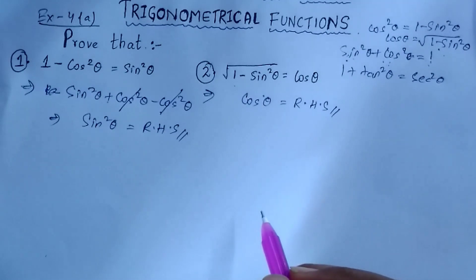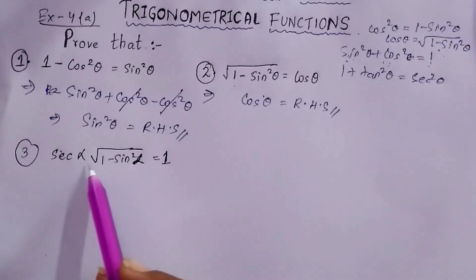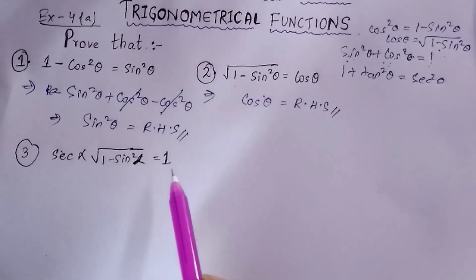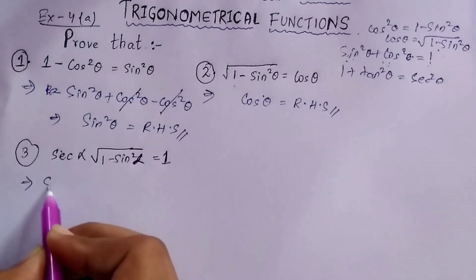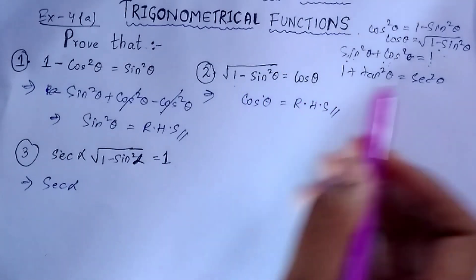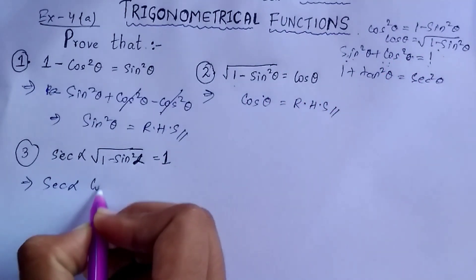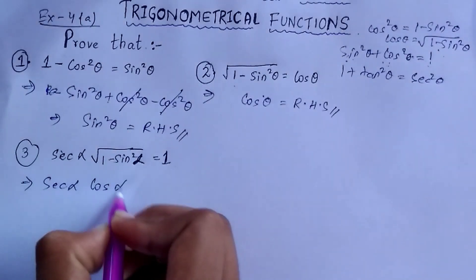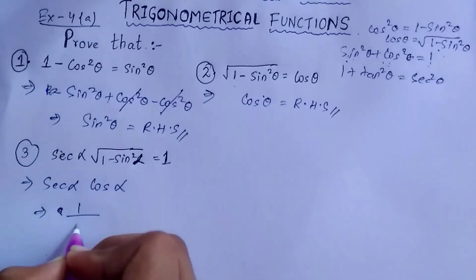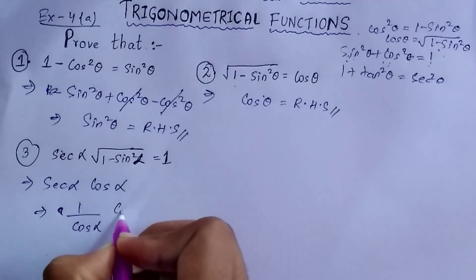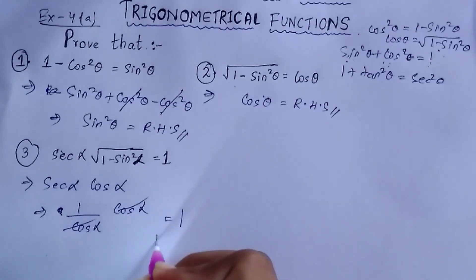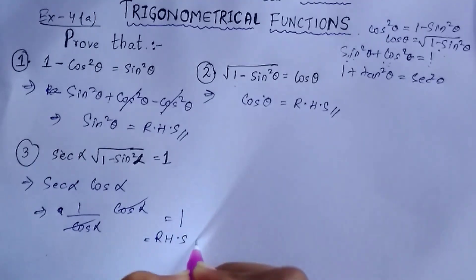Question number 3: prove that sec α · √(1 − sin²α) = 1. We have sec α and √(1 − sin²α). We already know that √(1 − sin²α) = cosα. So instead of that we can write cosα. Now sec α can be written as 1/cosα, and cosα is already there, so these two cancel and we are left with 1, which equals your RHS. Hence proved.